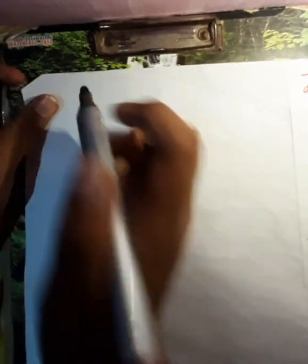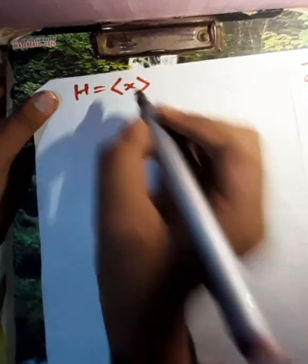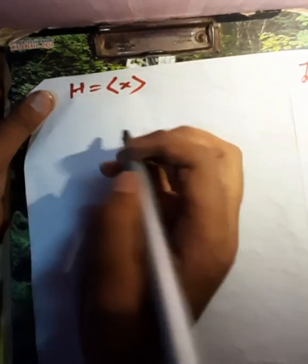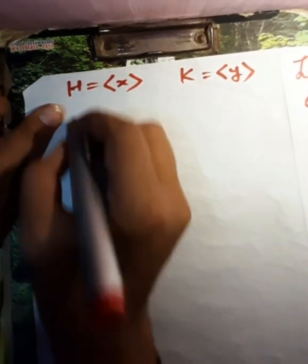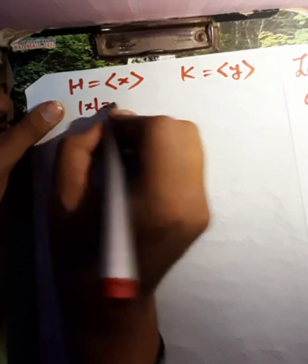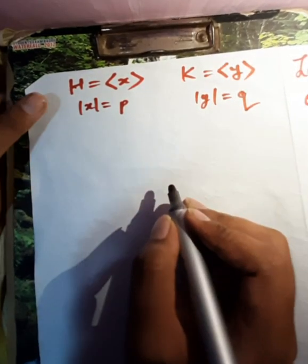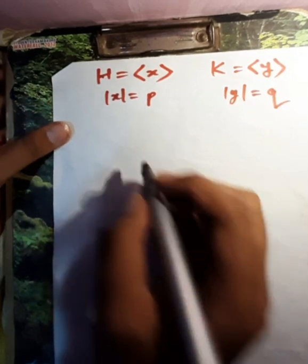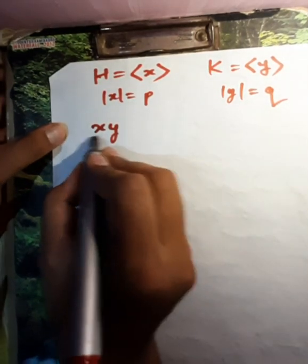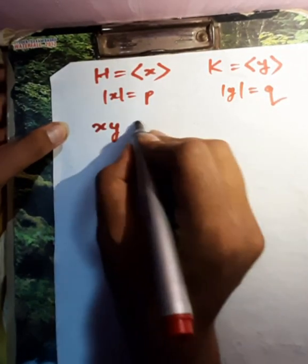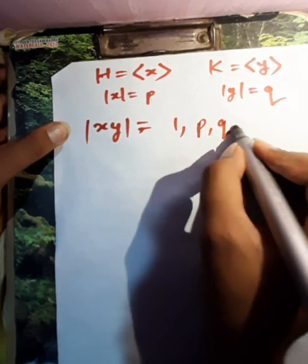Now, let H be generated by x and K be generated by y, which implies order of x is equal to p, order of y equal to q. Now, consider the element xy. The possible orders of xy are 1, p, q, or pq.